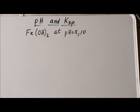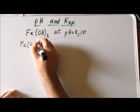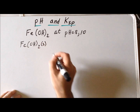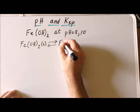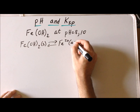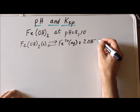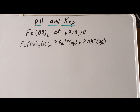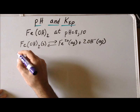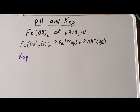First we want to write down the relevant equilibrium, which starts with iron 2 hydroxide as a solid, and then a small portion of it dissolves forming iron 2 plus ion — ferrous ion — and two OH minus hydroxide ions. Next, we want to write down the expression for the equilibrium constant, which goes by the special name of Ksp for the solubility product.